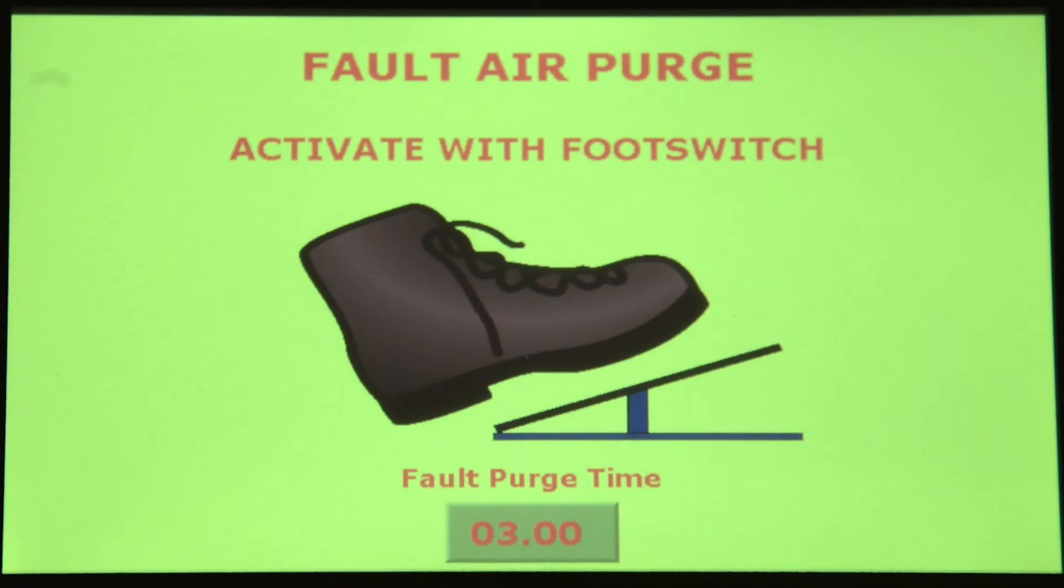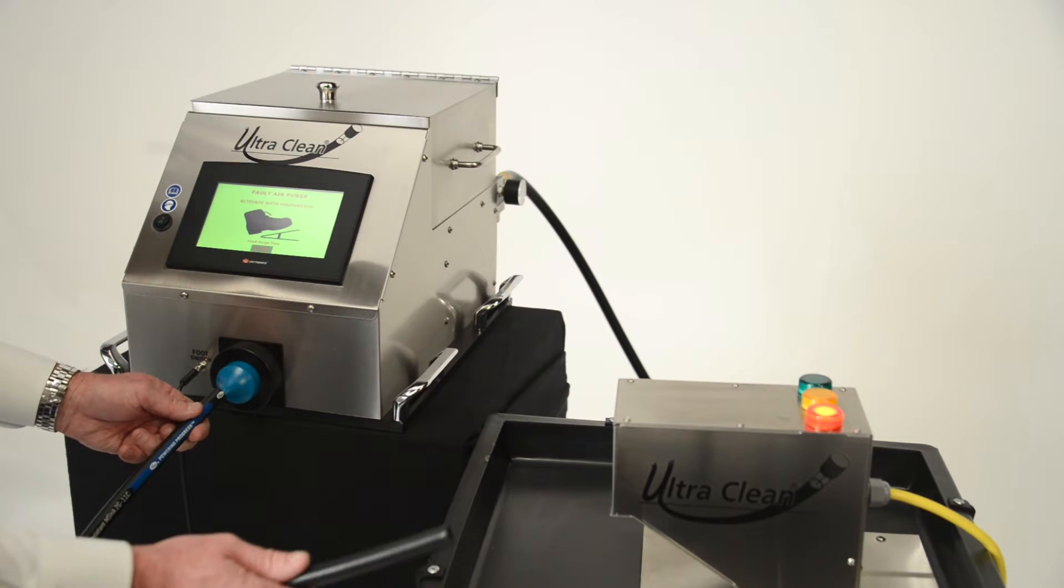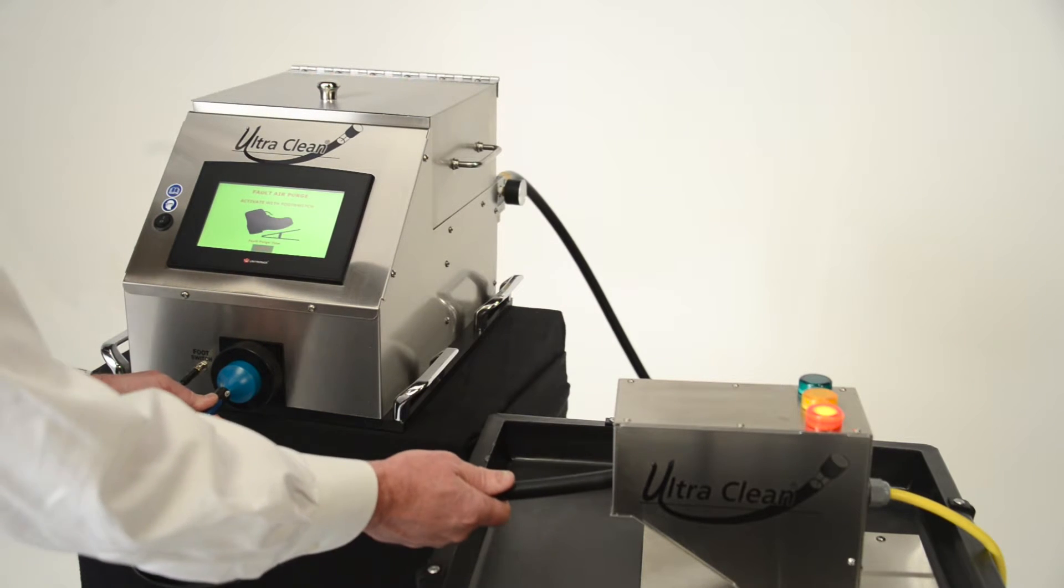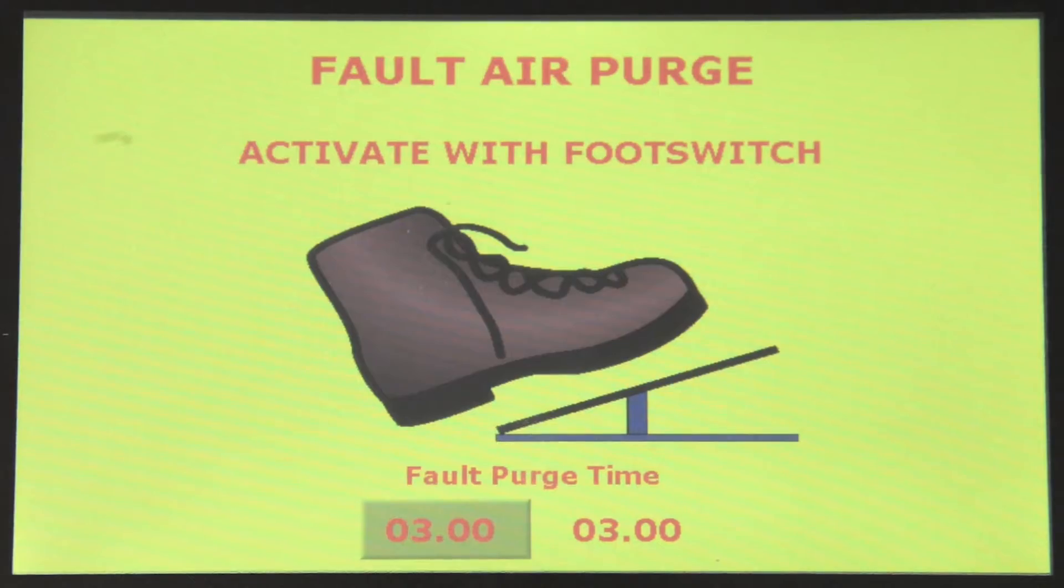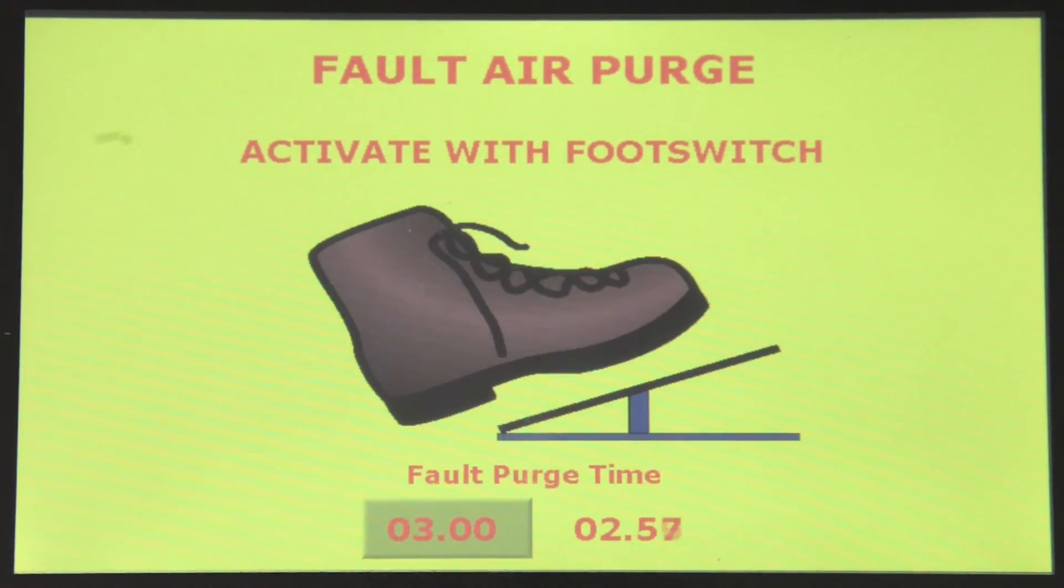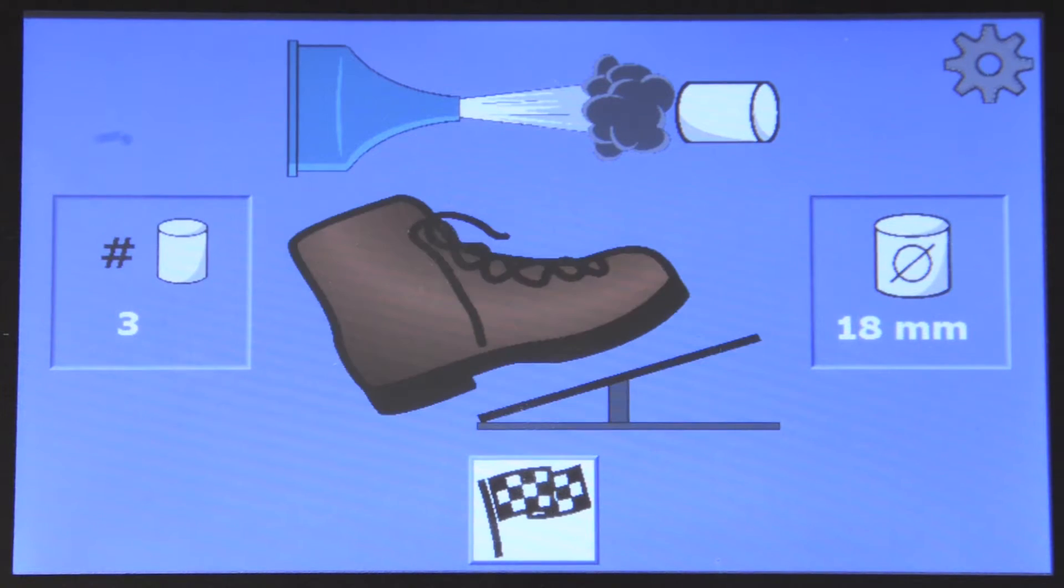The screen will now prompt the operator to activate an air purge in case there is a projectile still inside of the hose or tube. Hold the hose tightly against the nozzle and press the foot switch to activate the air purge. We recommend that the air purge fault timer be for 3 seconds or longer depending on the length of the hose or tube.